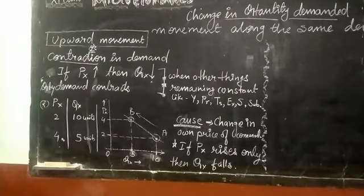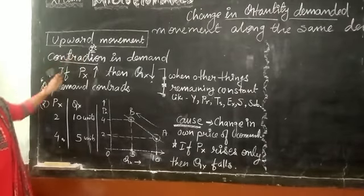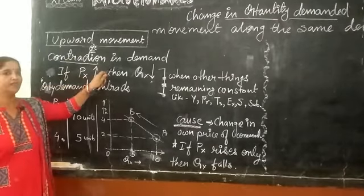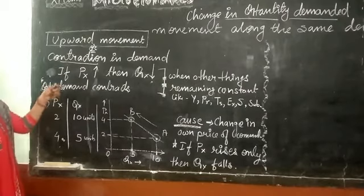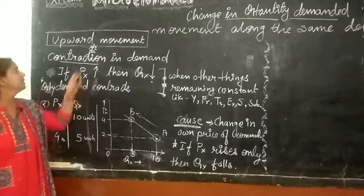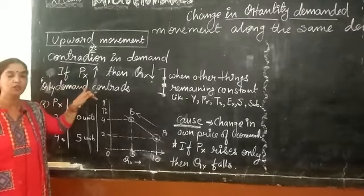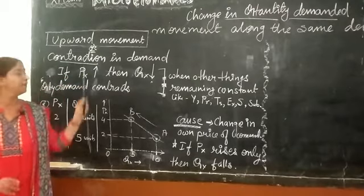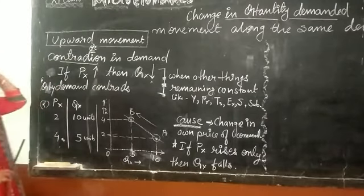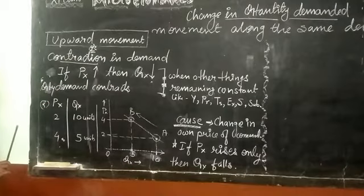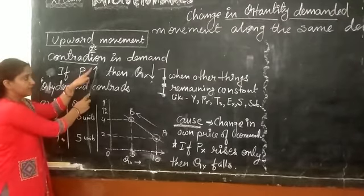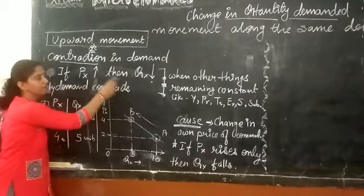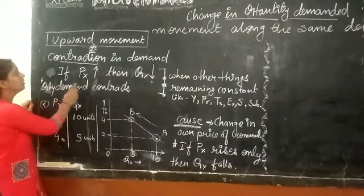In the condition of upward movement, there will be contraction in demand. We should understand this with the change in its own price. This condition can happen — the only reason behind the upward movement or the contraction in demand is the change in its own price. If the price of the commodity rises, only in that condition the quantity demanded falls, and this is called contraction in demand.